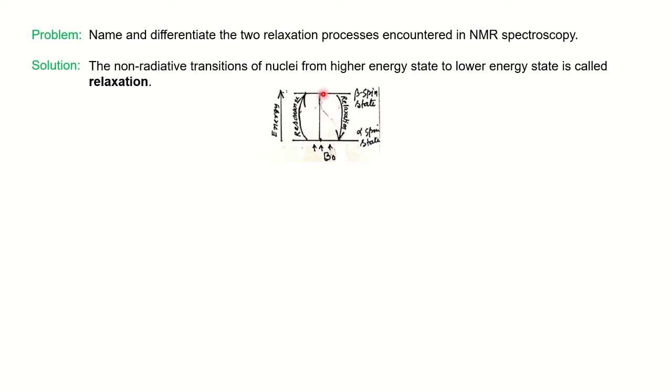The lifetime in the excited state is very short, so molecules will relax and come down to the ground state. This NMR phenomenon happens in the presence of external magnetic field, represented as B₀. We discussed what happens in external magnetic fields in a previous video. Relaxation means non-radiative transition from higher state to lower state.